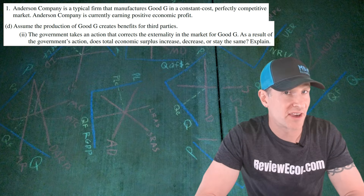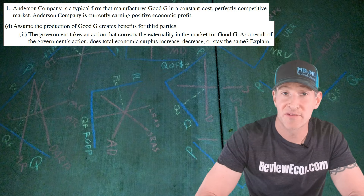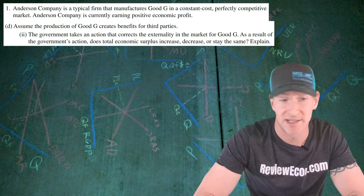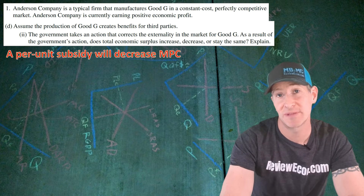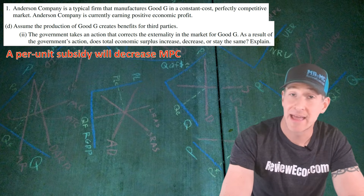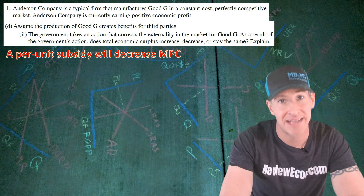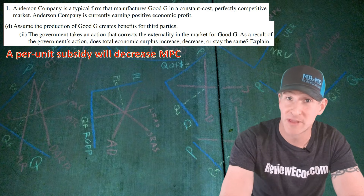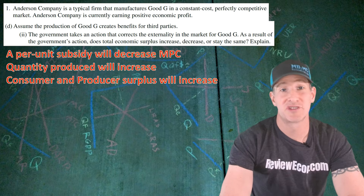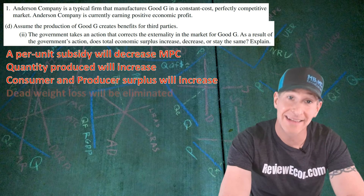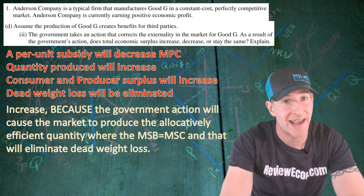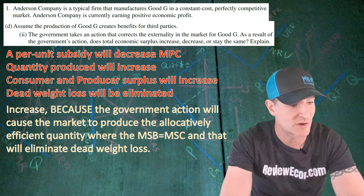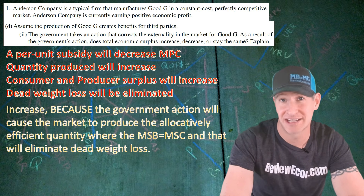For part D(ii), we are asked if the government takes action to correct for this externality, will the government's action increase, decrease, or not change total economic surplus? A per unit subsidy is the action that should be taken when we have a positive externality in production. That will decrease the marginal private cost down towards the marginal social cost on the graph. That will then increase the quantity produced, causing both consumer and producer surplus to increase, and deadweight loss will be eliminated. So the answer is increase, because the government action will cause the market to produce the allocatively efficient quantity where MSB equals MSC, and deadweight loss will be eliminated. And if you have an answer something like that, you get your last point.